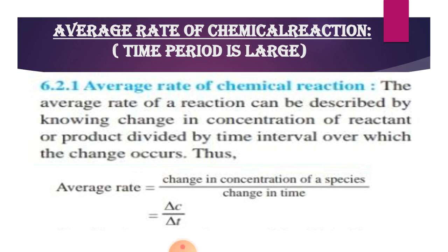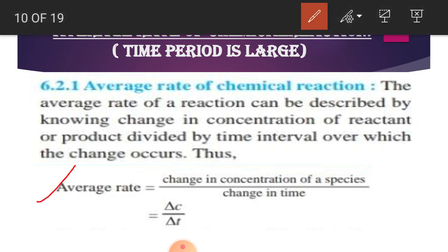This kind of rate is applied for the reaction whose time period is large - it should be a finite time but the time period is large. Average rate of chemical reaction can be described by knowing the change in concentration of reactant or product divided by the time interval over which the change occurs. So your average rate is related to the change in concentration of a species - either product or reactant - divided by change in time. So here we are writing delta C upon delta T.